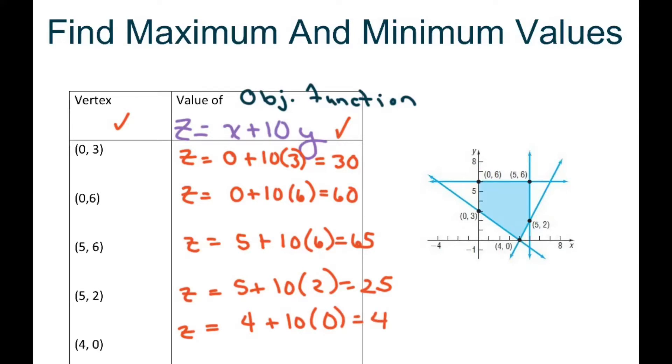So basically to find our max you pick your largest number. So our max equals 65 which occurs at 5 comma 6. And our minimum is your smallest number which equals 4, and that occurs at 4 comma 0.